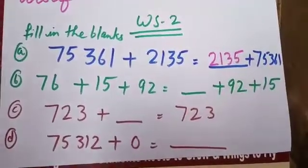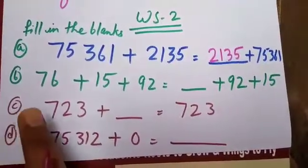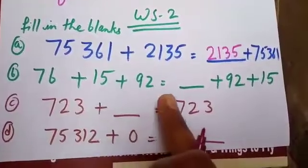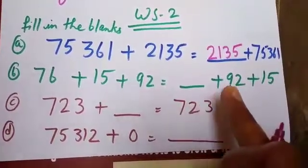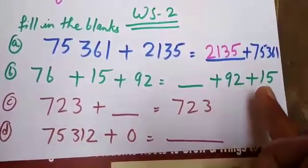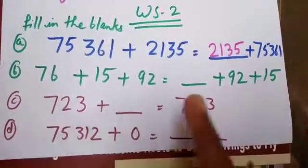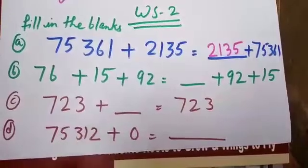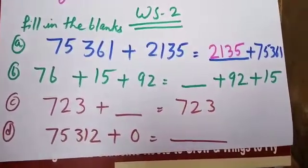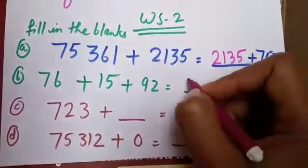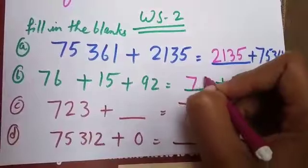Now come to Part B: 76 plus 15 plus 92 is equal to dash plus 92 plus 15. The sum remains the same even after changing the order of addends. So I will write here 76.